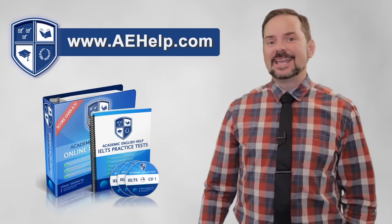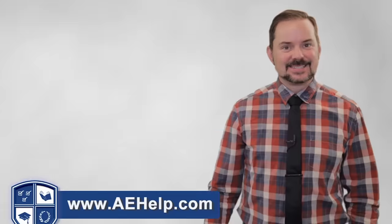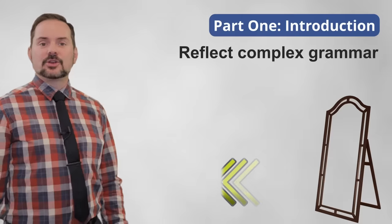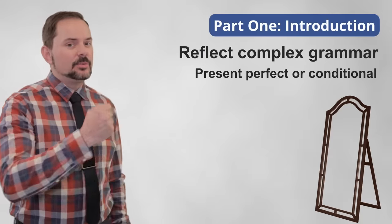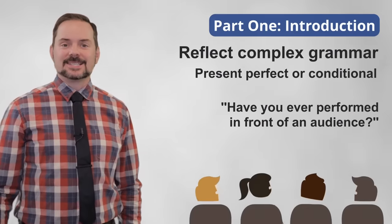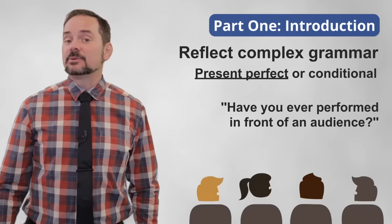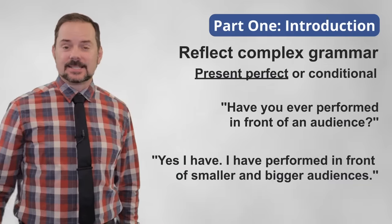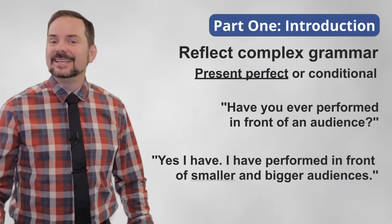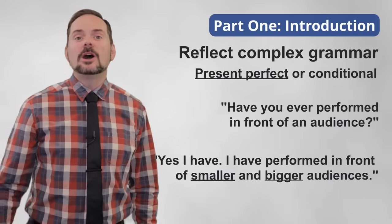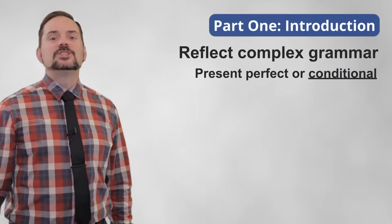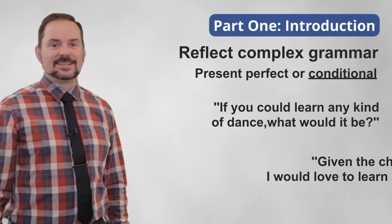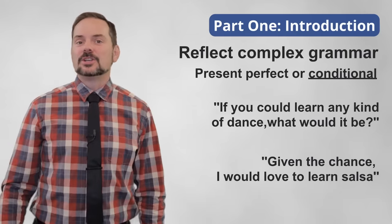Make sure to go through the bonus writing and grammar section of your materials. Even more importantly, make sure to reflect complex grammar when the question is either a present perfect or a conditional. Like when the examiner asks 'have you ever performed in front of an audience?' — this candidate cleverly uses the present perfect right away, simply saying 'yes, I have, I have performed in front of smaller and bigger audiences.' Then she includes quantification — meaning numbers — a few people like three or four and up to a couple hundred at a wedding. When asked a conditional, 'if you could learn any kind of dance, what would it be?', she responds with a conditional: 'given the chance, I would love to learn salsa.'